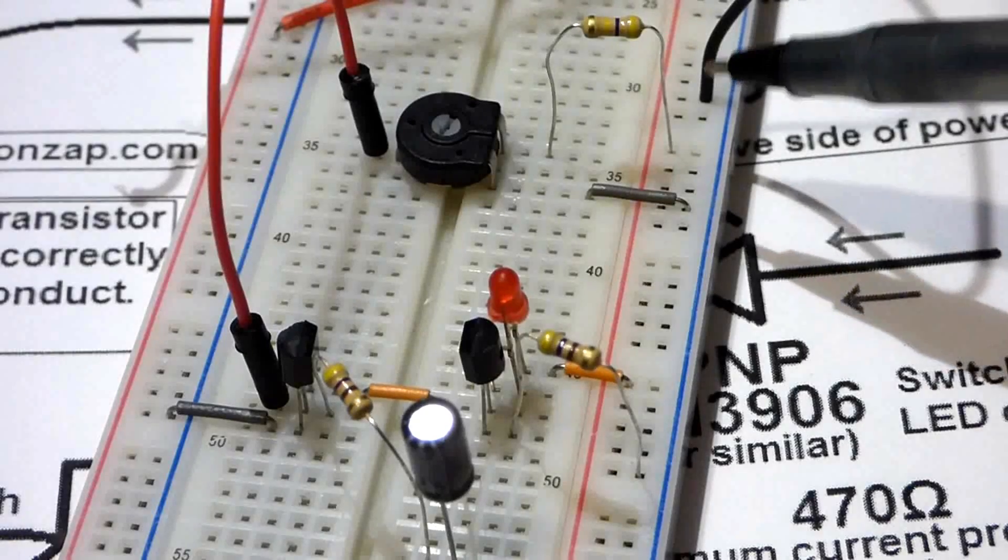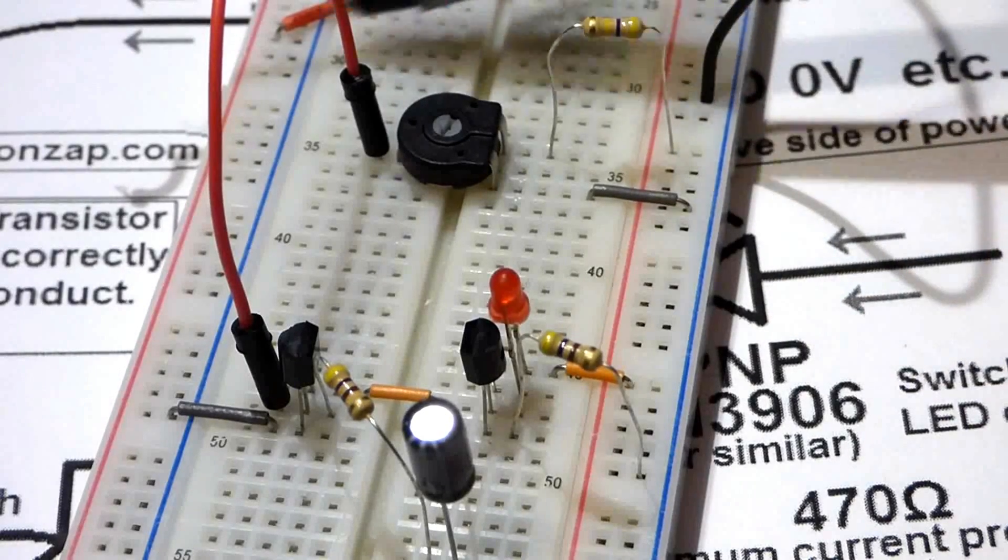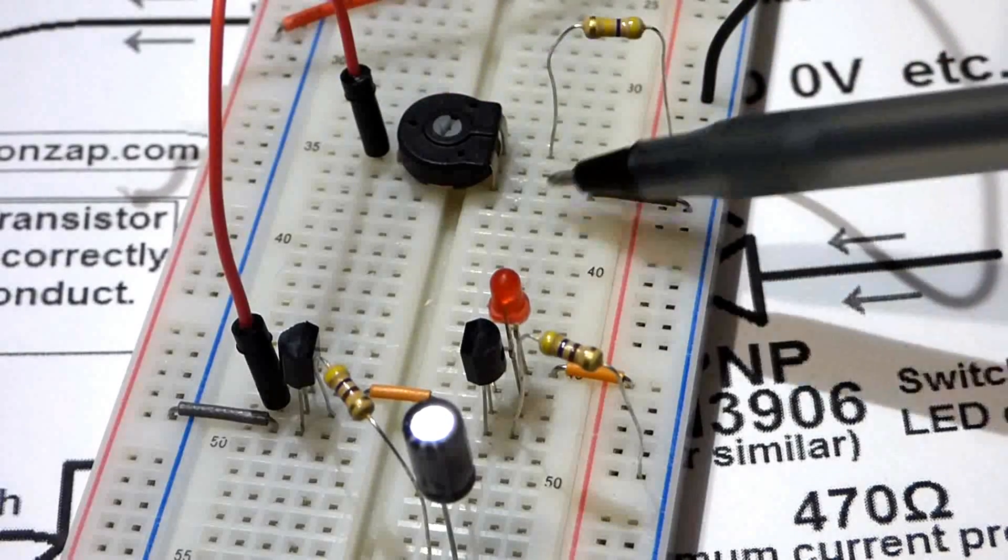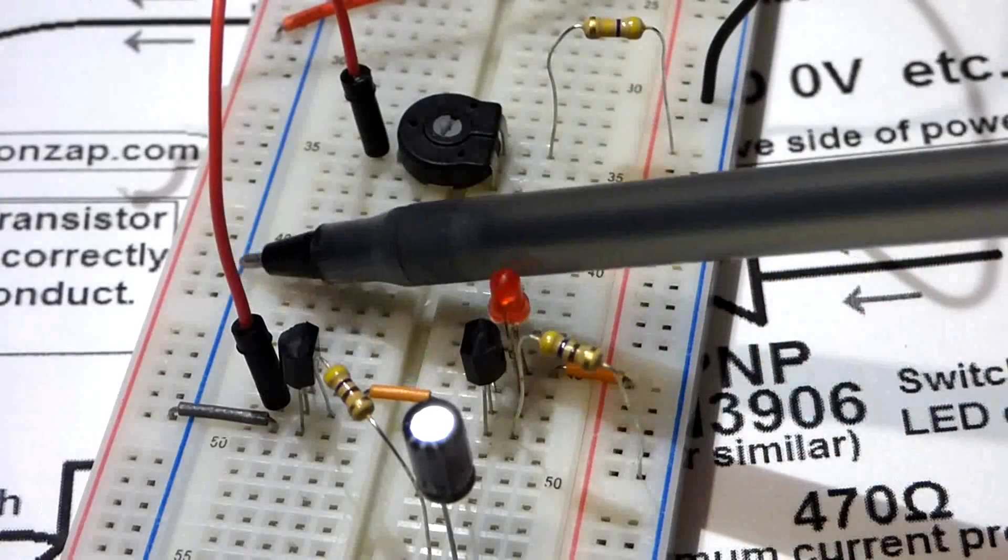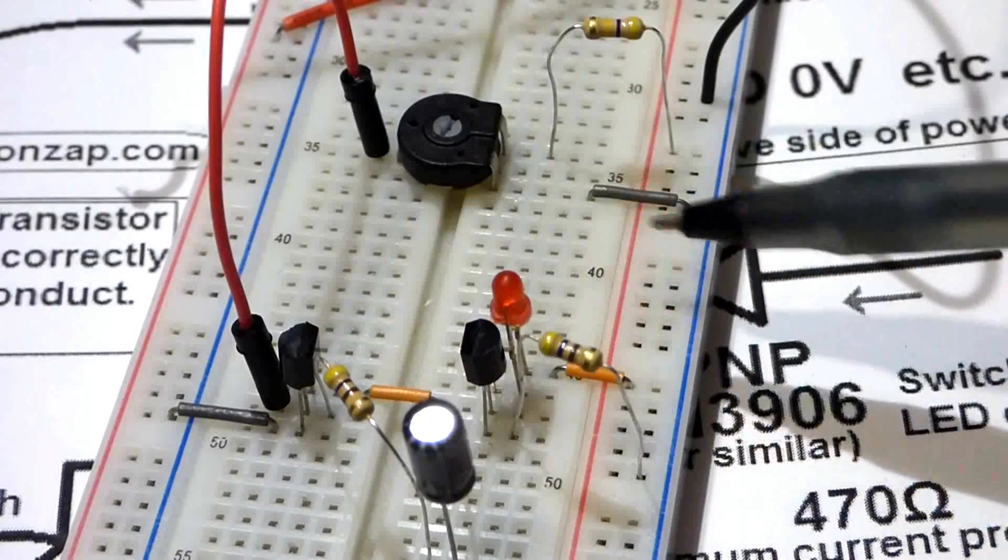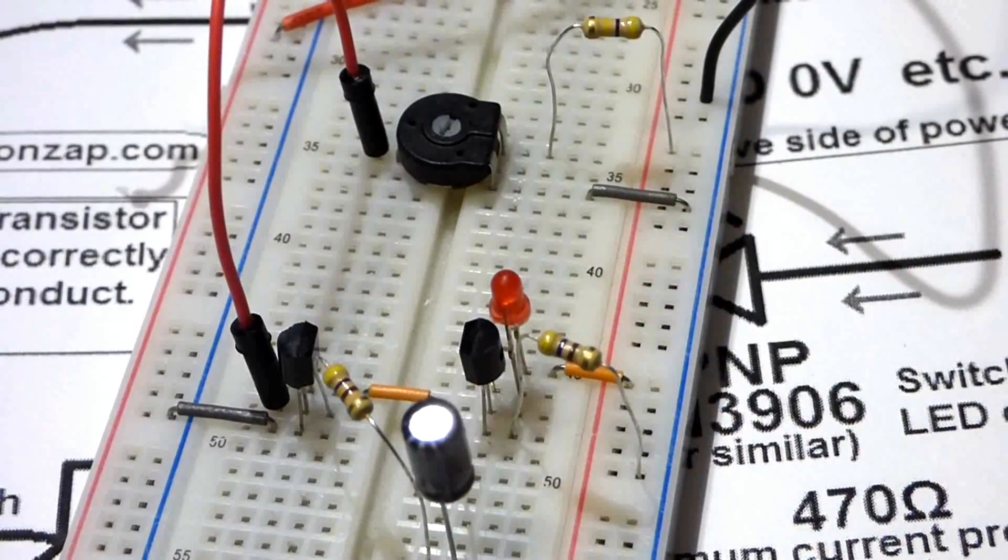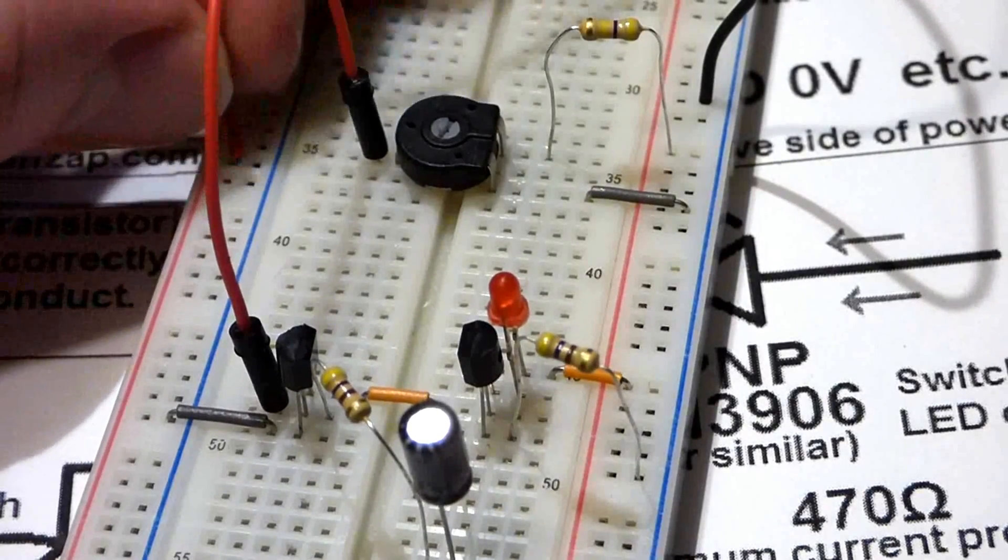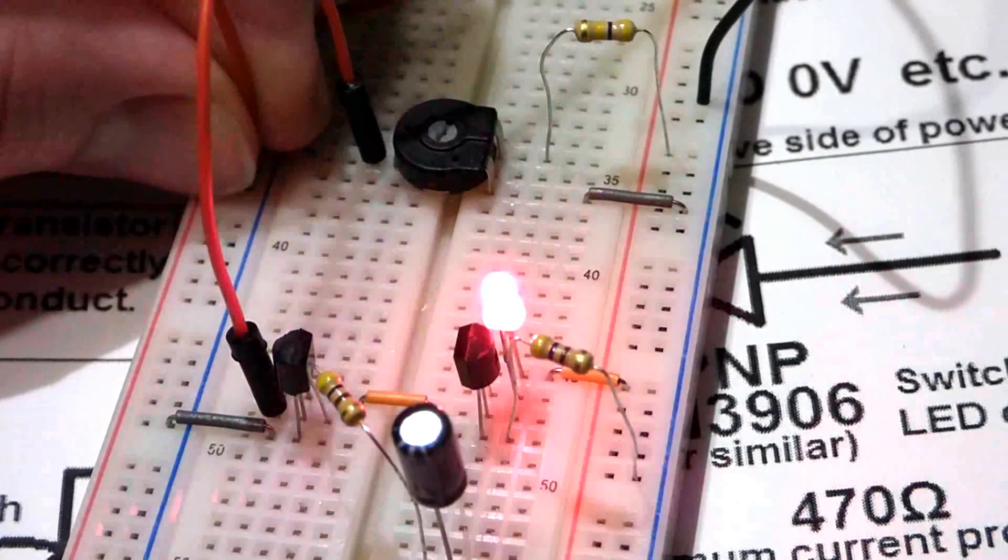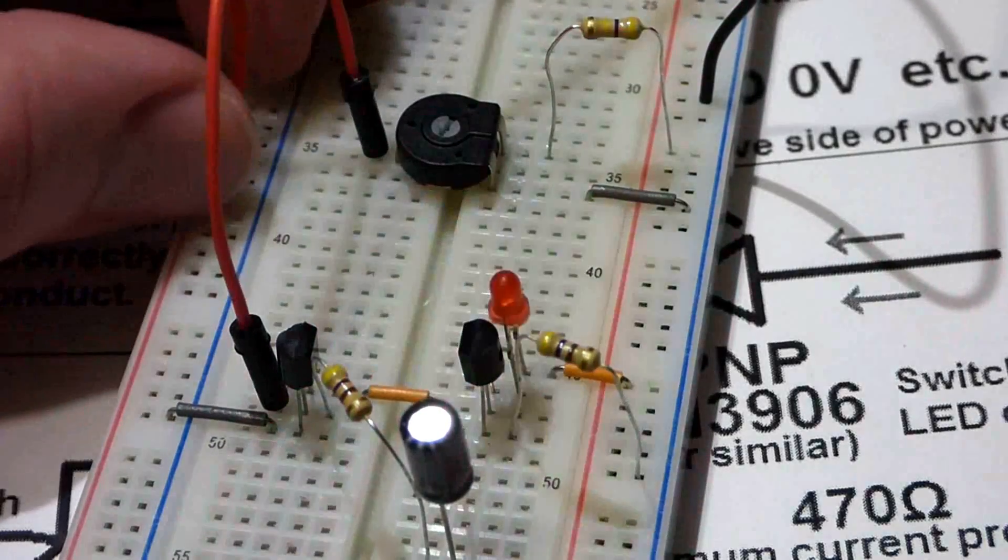Now I have the negative side plugged in. You can kind of see a red wire here. Both the black side is connected to the black side already, and the red side is connected to the red side, so that both power rails get the same power. And if I wire this properly, the LED should start flashing.